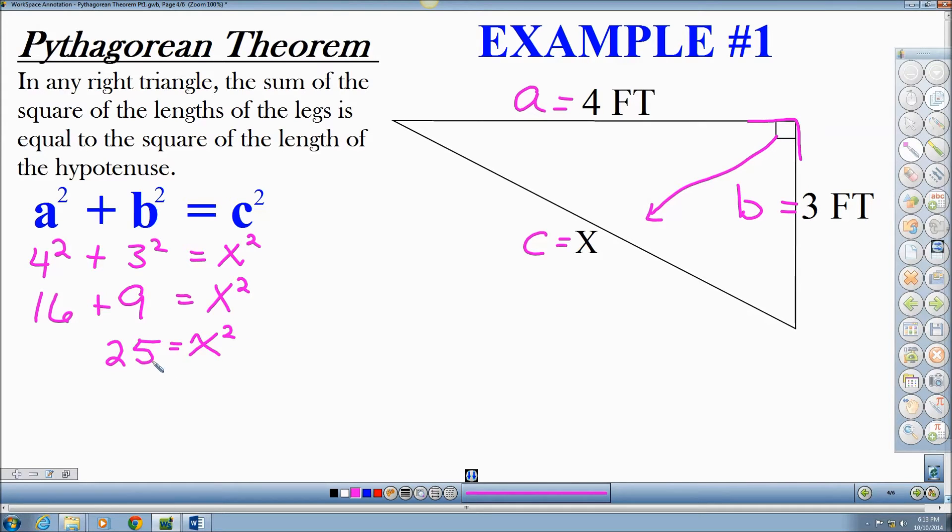And now in order to find out how much X squared or X is, I have to take the positive square root of both sides. This undoes the squaring of X. So in order to unsquare X squared, I have to take the square root.